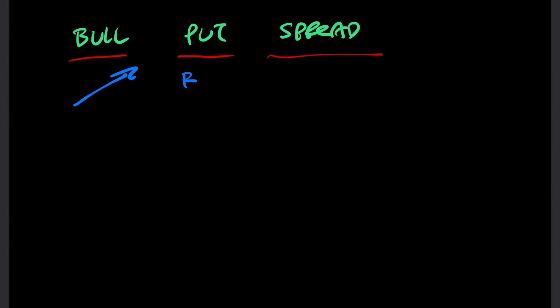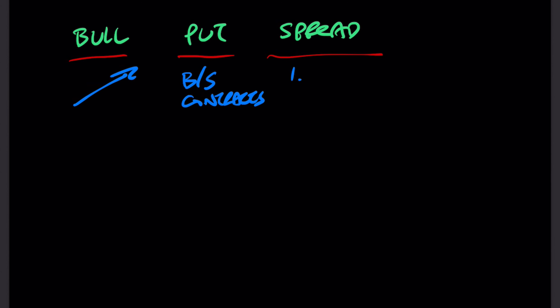The put portion just means that you're selling and buying put contracts to implement this strategy. The spread lets you know how much you're risking to win how much, broken down into two parts: number one is how much you're risking, and number two is the reward — how much you're winning.